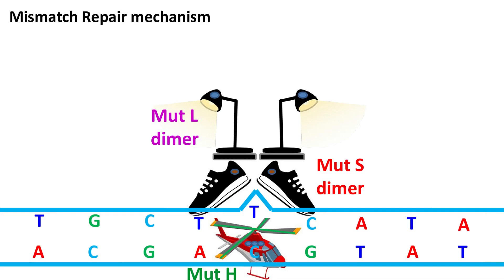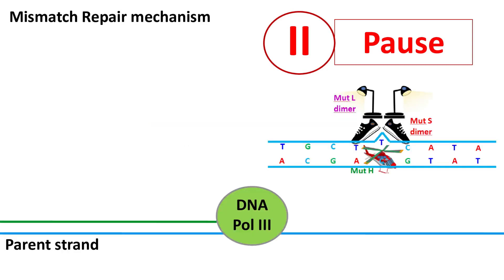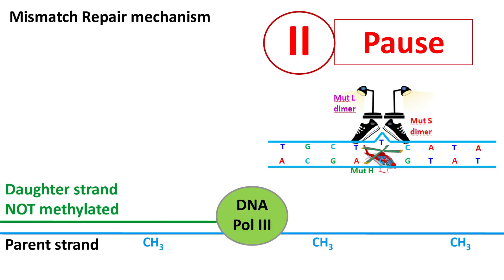Now let's take a pause and recall one very important point of DNA replication. It should be noted that the parent strand is methylated whereas the newly replicated daughter strand is not methylated. Usually, adenine at the GATC sequence in the parent strand is methylated. This overall structure is called hemimethylated DNA — that is, one strand is methylated whereas one is not.